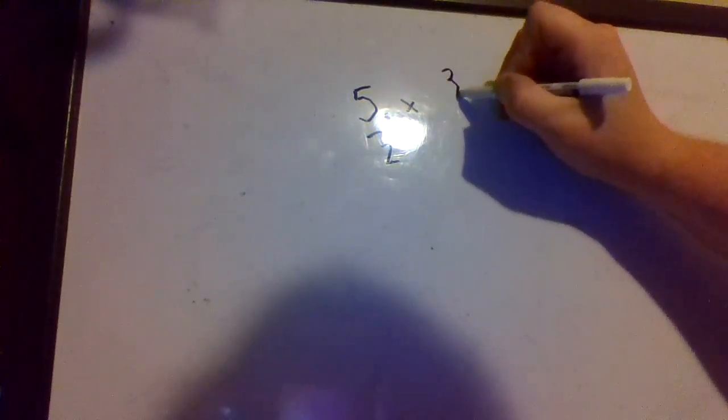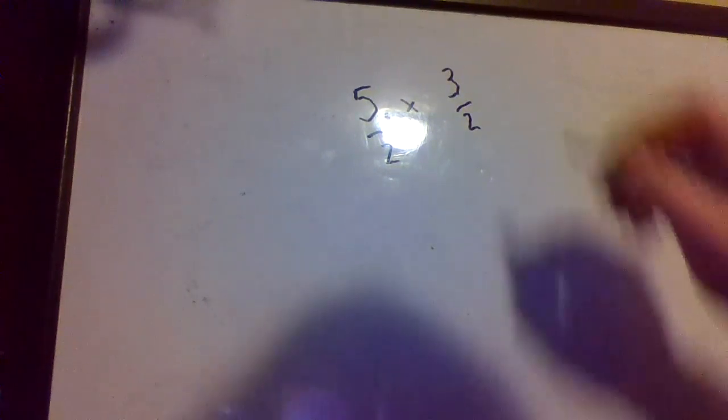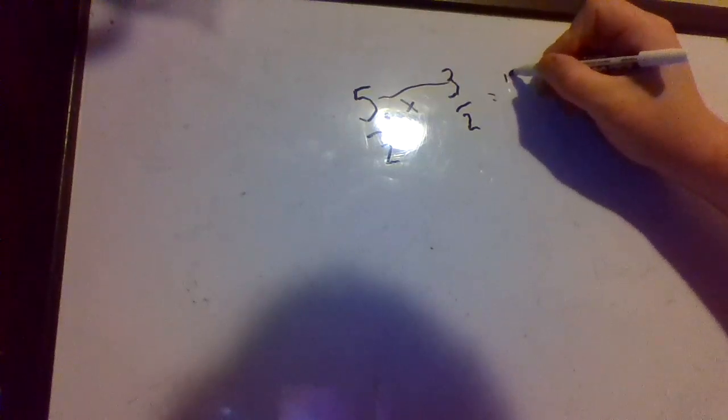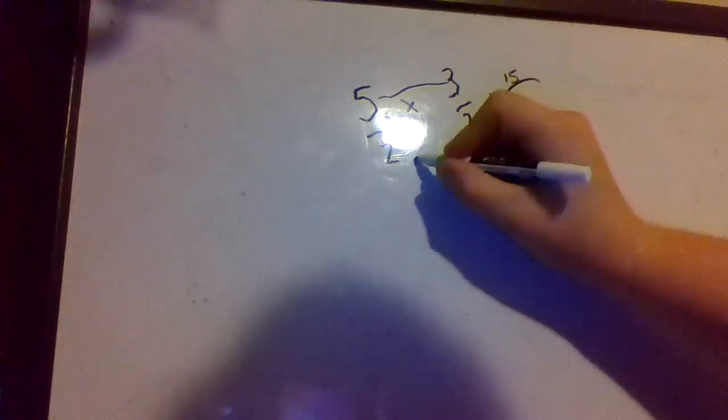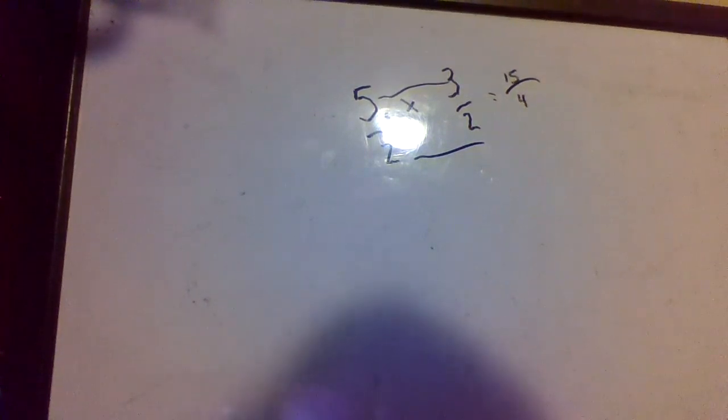Now the reason that multiplication is so straightforward compared to addition and subtraction is all we do is we multiply it straight across. So 5 times 3 is 15, and then 2 times 2 is 4. So our answer here is 15 over 4.